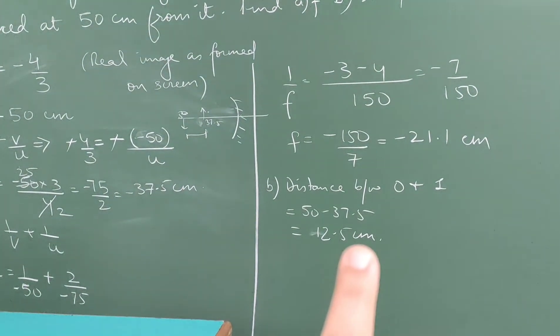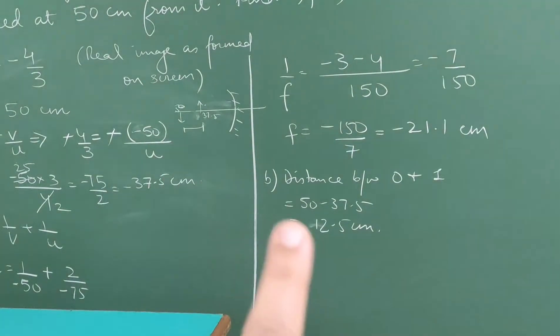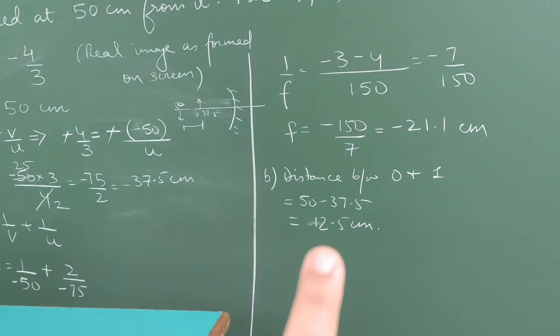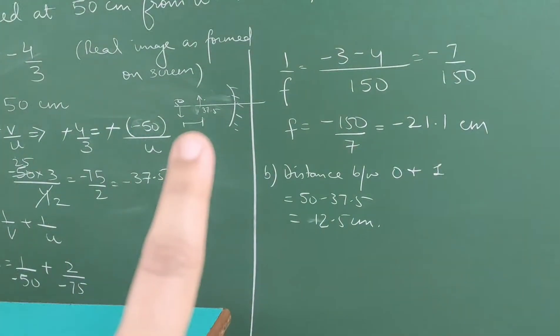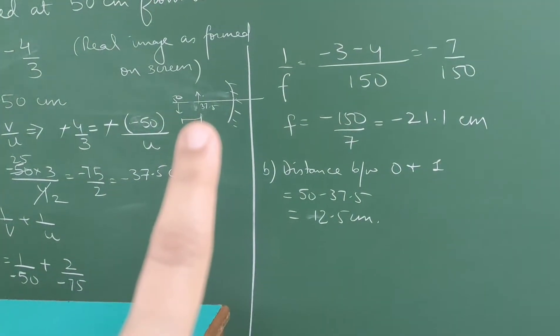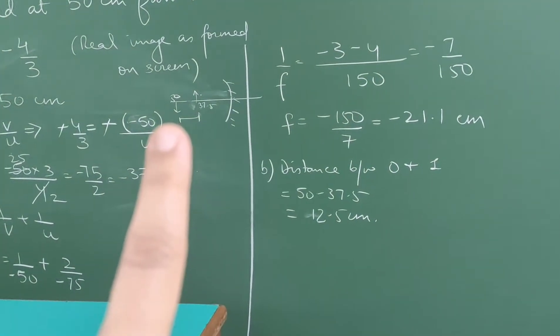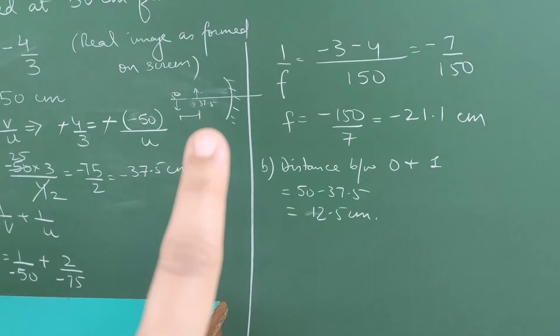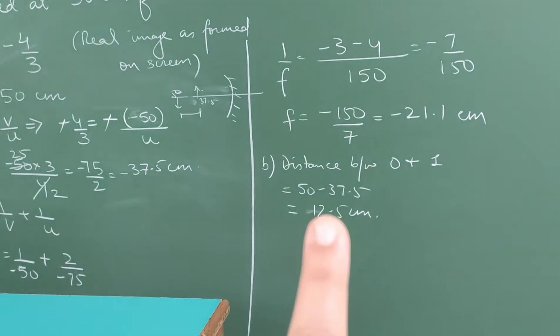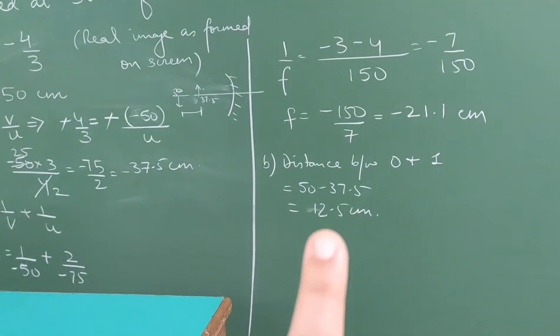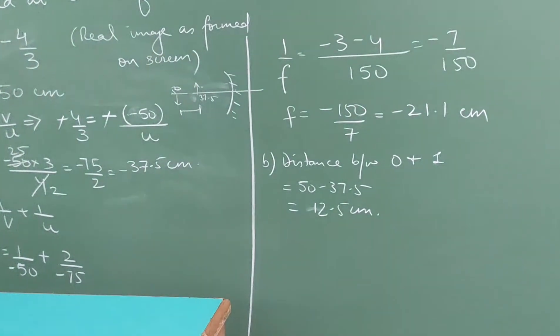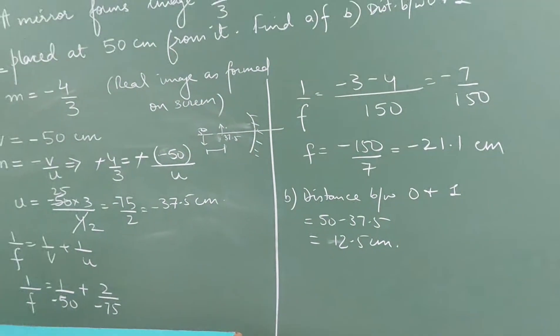Without sign convention, you just take the gap between 50 and 37.5, so that becomes 12.5 centimeters.